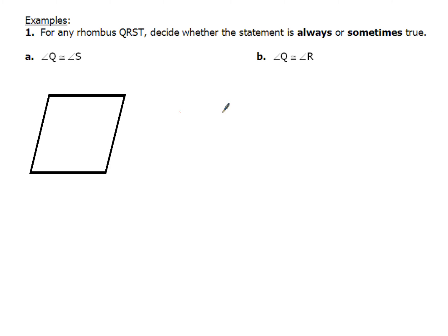Let's draw a picture of rhombus QRST and label each angle Q, R, S, and T. Like a parallelogram, opposite angles are always congruent, so angle Q and angle S are always congruent. Therefore, for part A, angle Q ≅ angle S is always true.